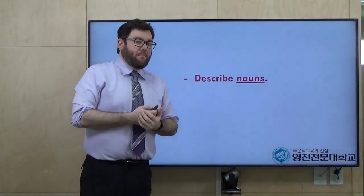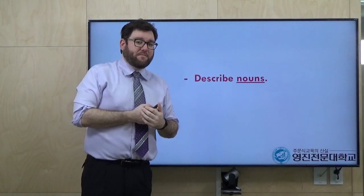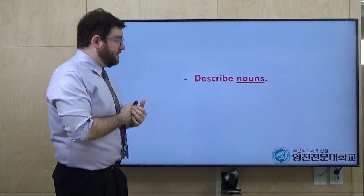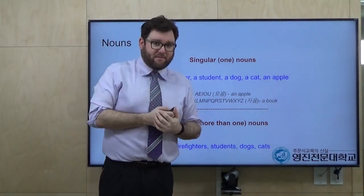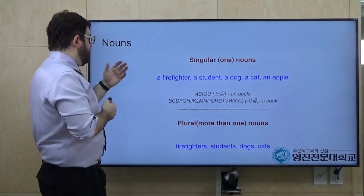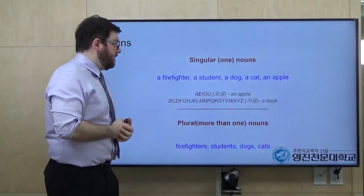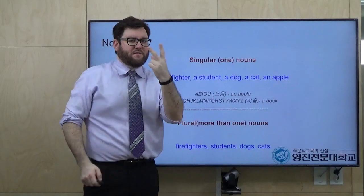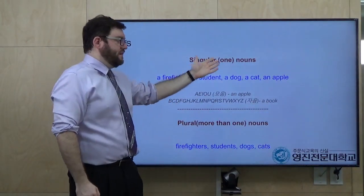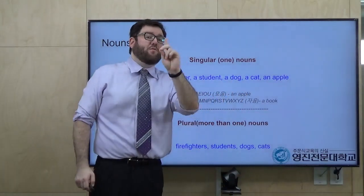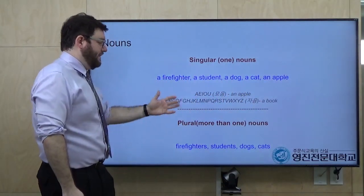Another reason we use B-verbs is to describe nouns. So let's look at some nouns. Nouns — in Korean, 명사. We have two kinds of 명사. First is singular nouns — singular meaning one, 한 개만. And we have plural nouns — plural means many.